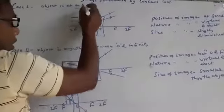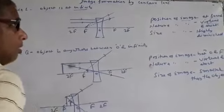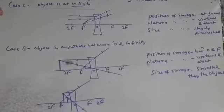So for case number 1, if object is at infinity, image forms at focus. Nature virtually erect and highly diminished.